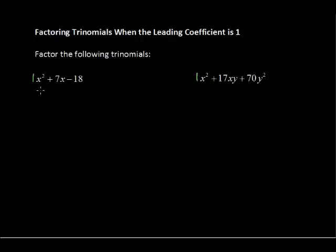Okay, this first example is x squared plus 7x minus 18. Well, the pattern that the trinomial is going to factor into is going to look like this. And we're going to put the letters, the variables, of that first term.